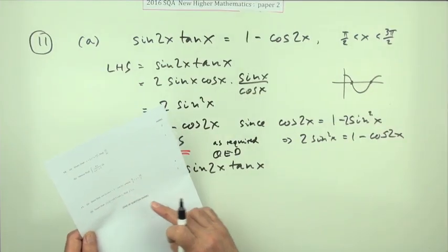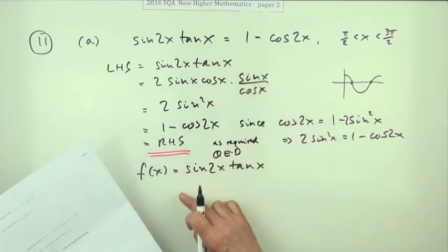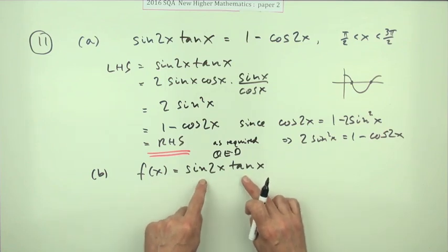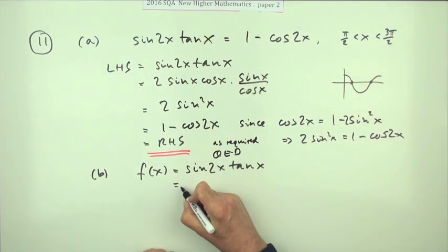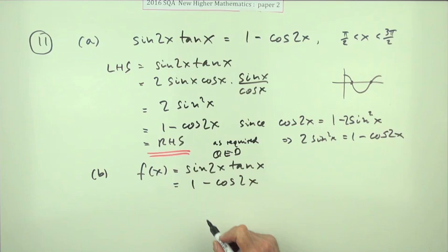And part b: given that f of x is sine 2x tan x, the thing you had in the first place, find the derivative. Well the point is you don't know how to differentiate a product like this, but since that is equal to this, you could replace that with that. That's an identity, it's identical to it, and differentiate that instead.